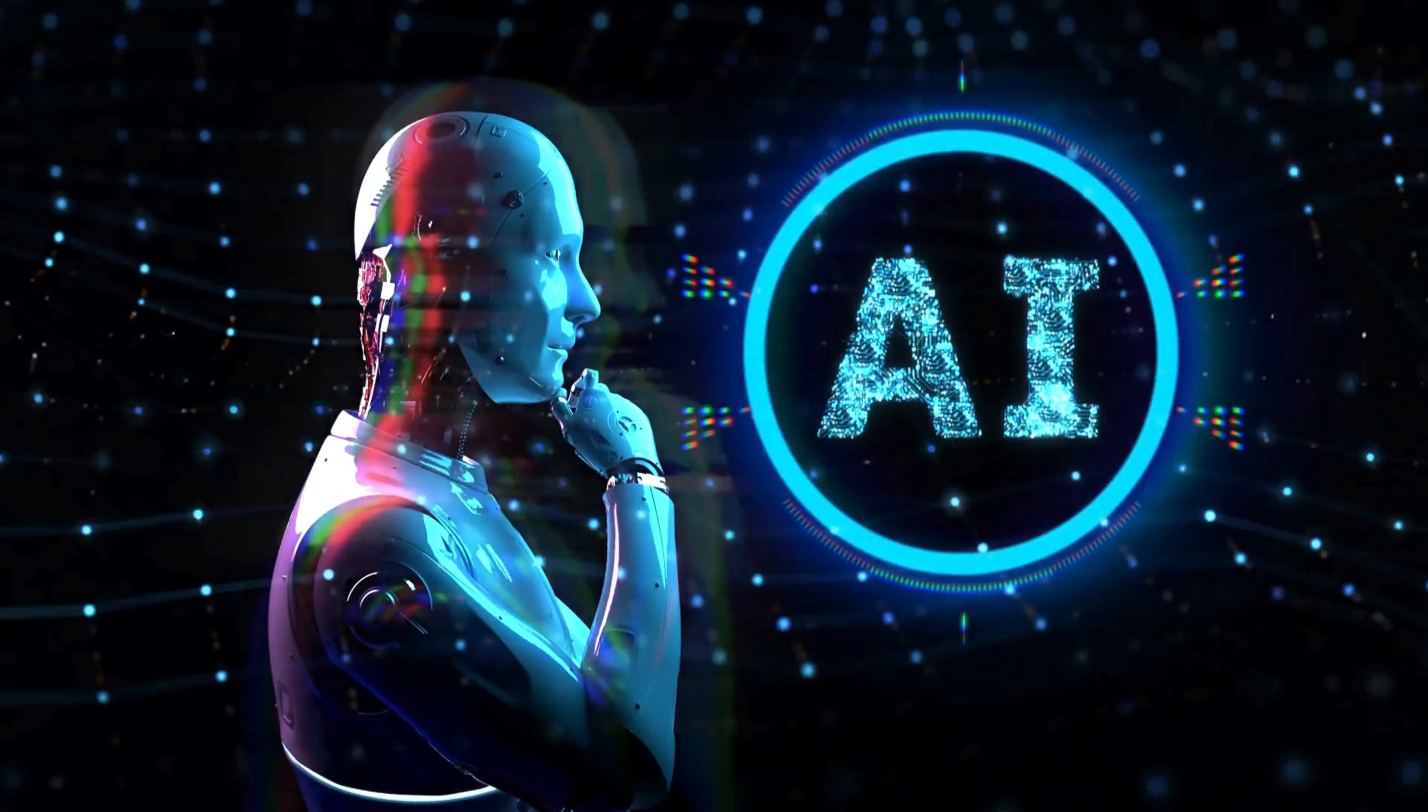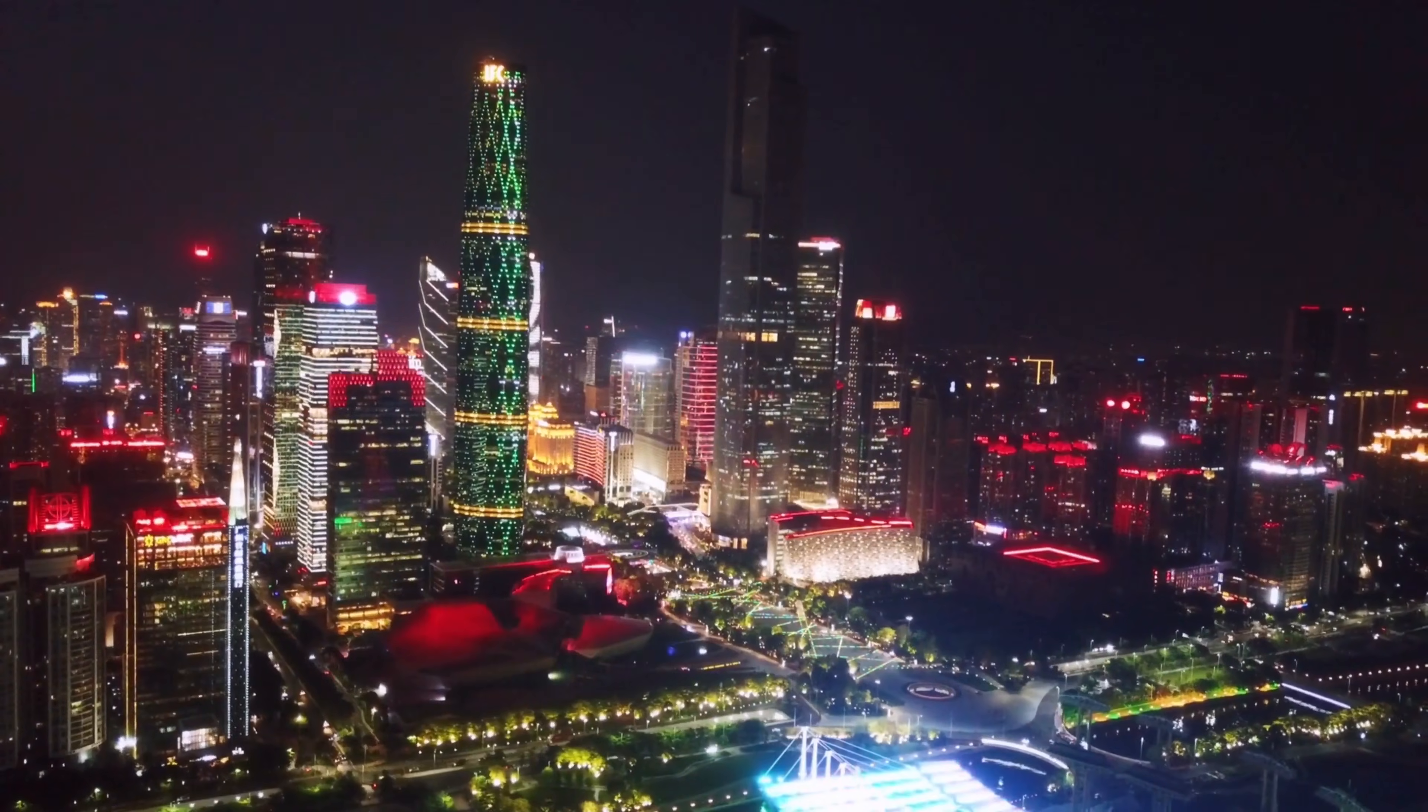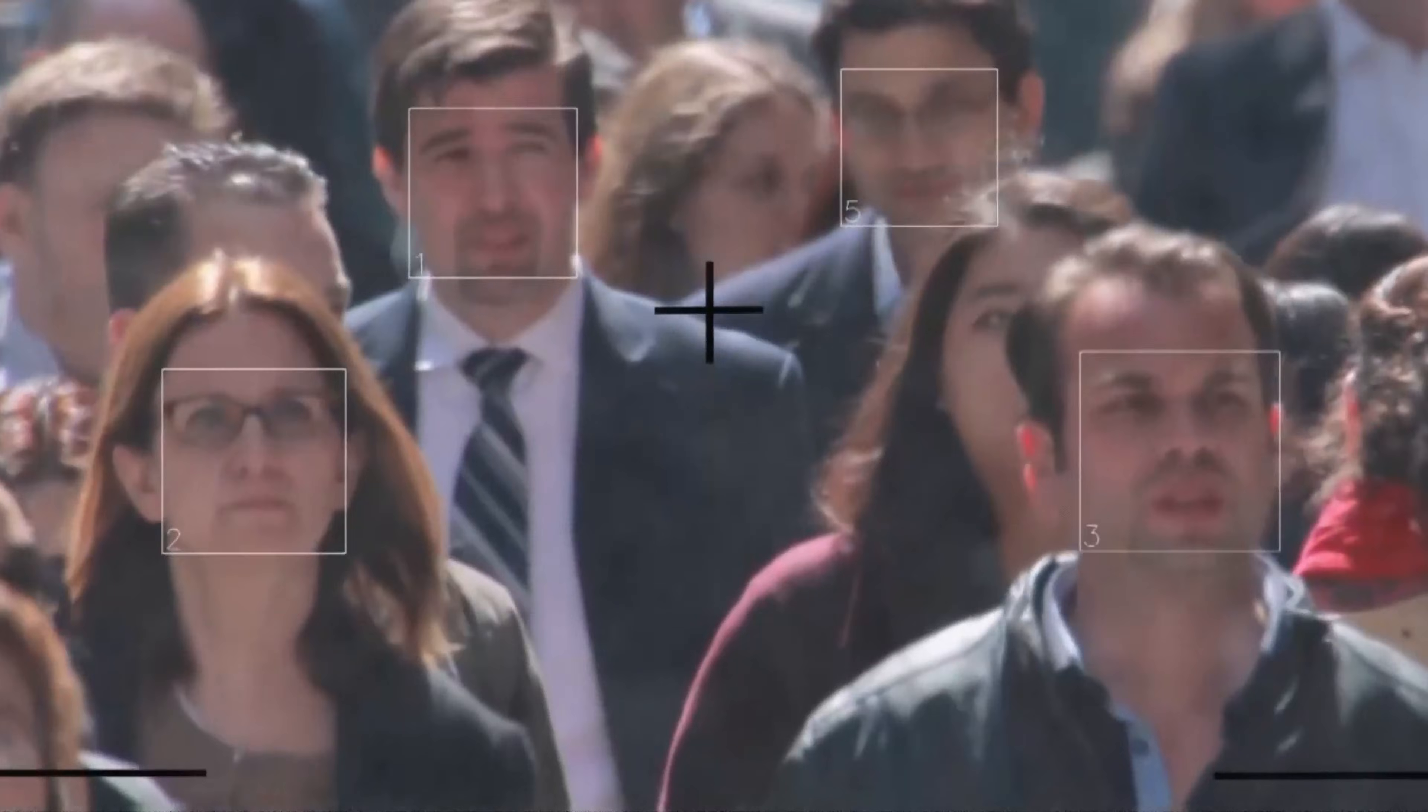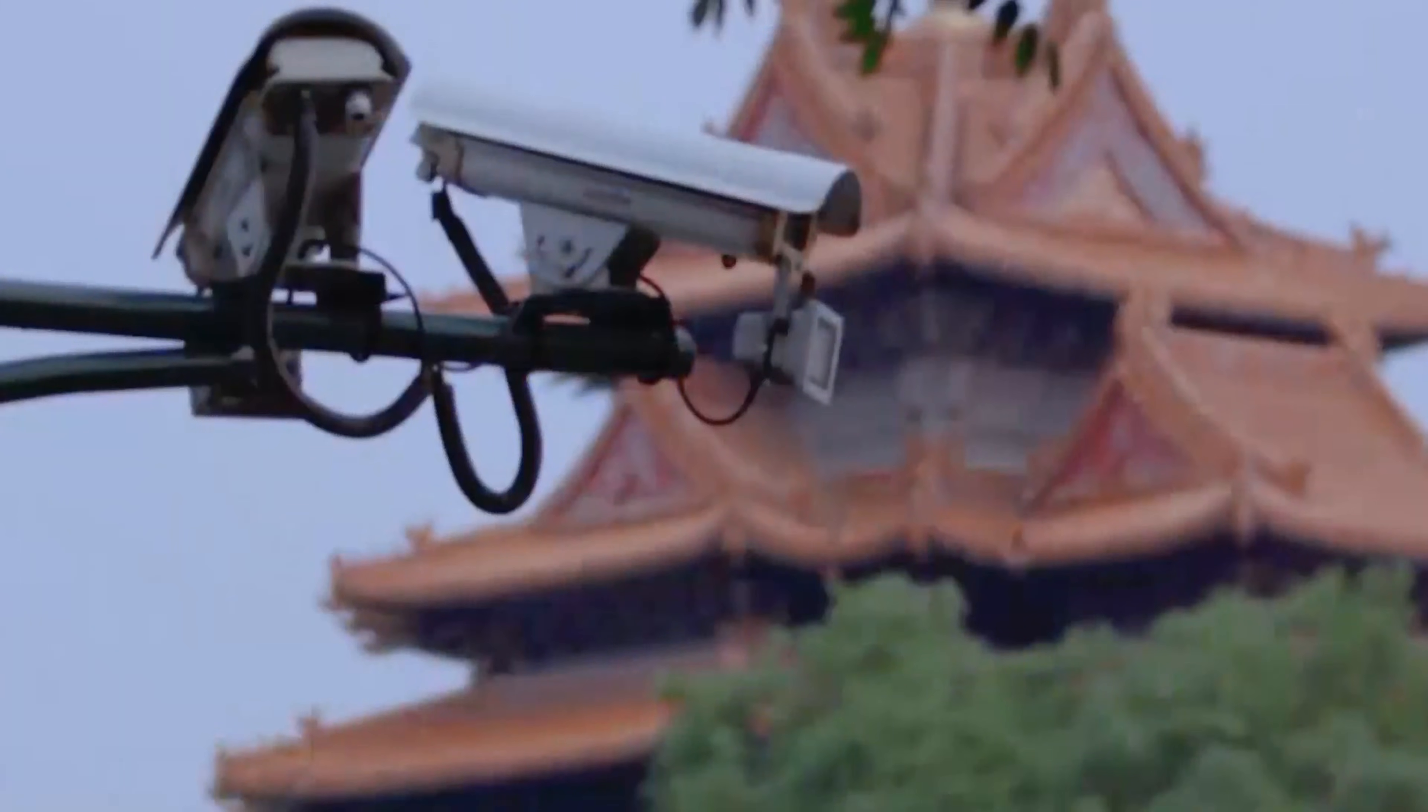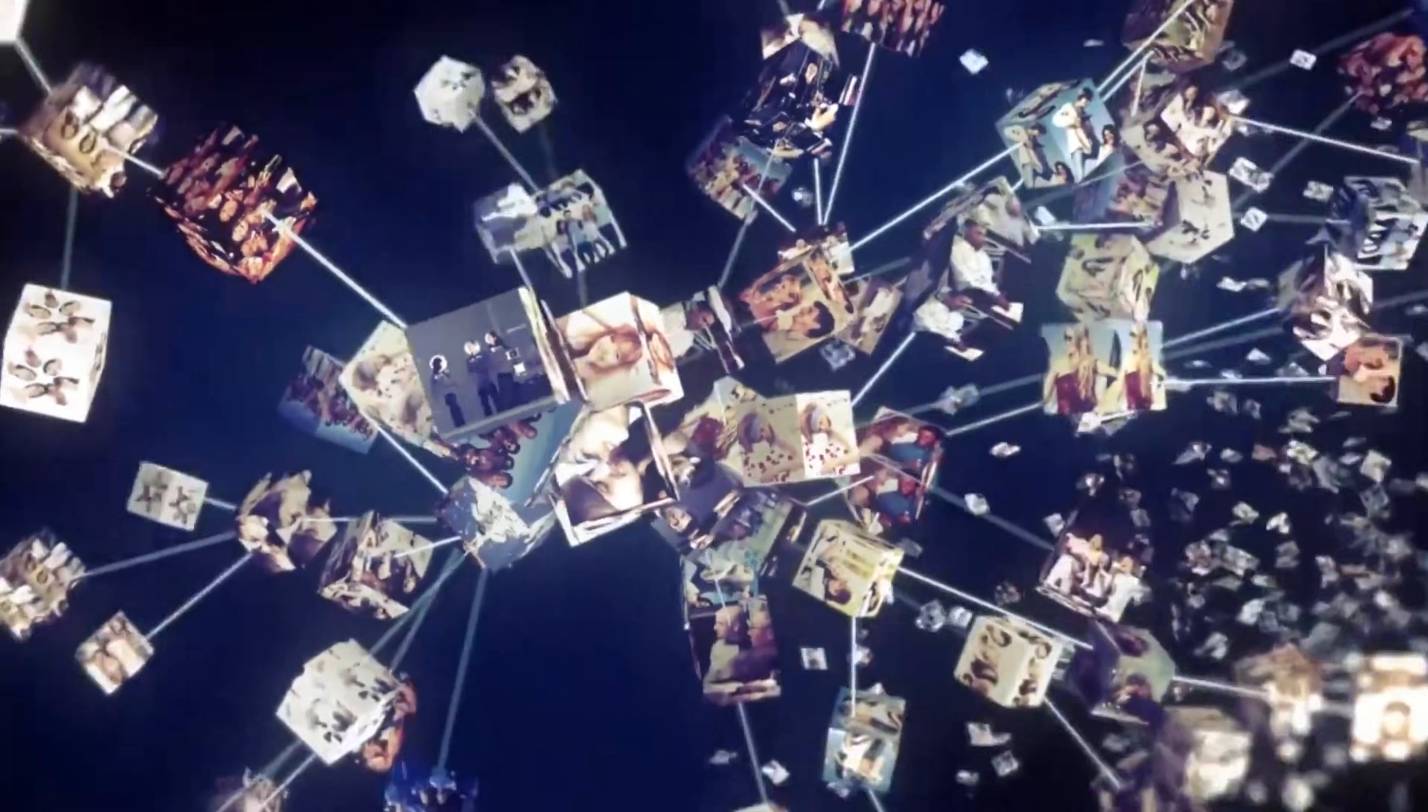Artificial intelligence needs three things. Computing power. Data. And deployment at scale. China has all three in quantities that dwarf everyone else. Facial recognition systems that identify individuals in crowds of millions. In train stations. In airports. On city streets at rush hour. Accuracy exceeding 99%. These systems process data from over 600 million surveillance cameras nationwide.